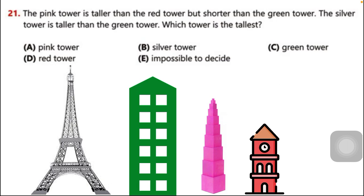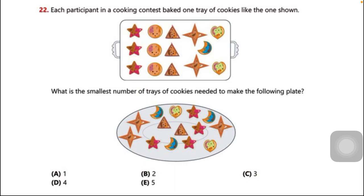We can easily differentiate which one is the tallest — the silver tower. So the answer is option B, silver tower. This is the correct option. Question number 22: each participant in a cooking contest baked one tray of cookies like the one shown.